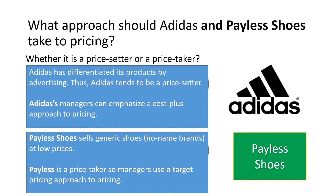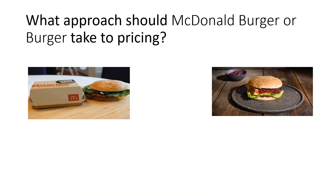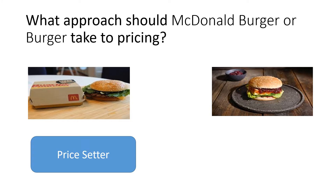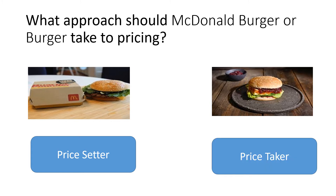If you are a price taker, you are more inclined to use the target pricing approach. For example, consider two burgers — a McDonald's burger versus a burger from a roadside restaurant. We would pay a premium for McDonald's, but pay less for a generic burger. McDonald's has more control over the prices it sets, whereas a generic burger seller is a price taker because the product is not unique and there is high competition with everyone selling the same product.